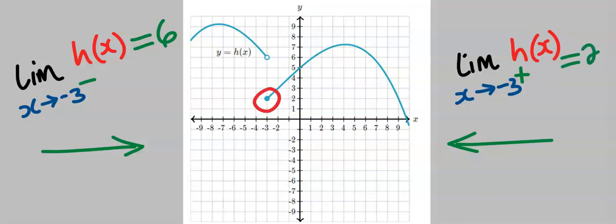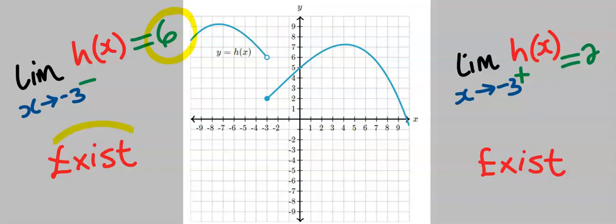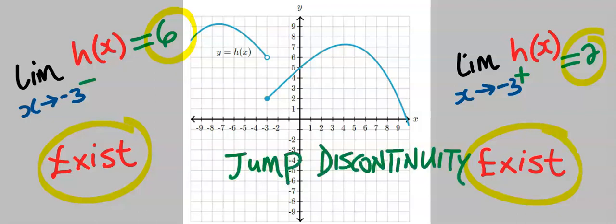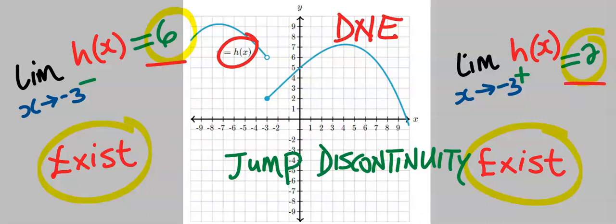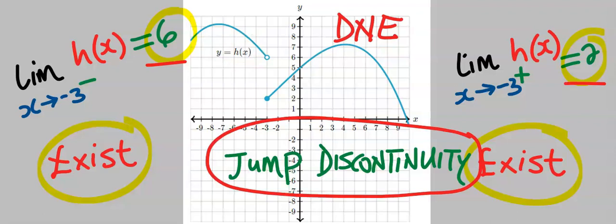This shaded point means that plugging in x = minus 3 gave us 2 by direct substitution. The approach from the left exists and the approach from the right exists, but since their answers are not the same — 6 versus 2 — we conclude that the limit of h(x) does not exist. This is called jump discontinuity.